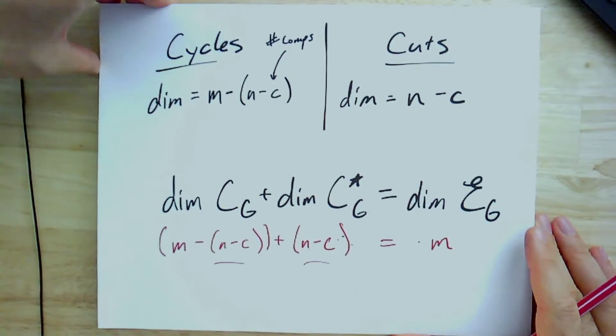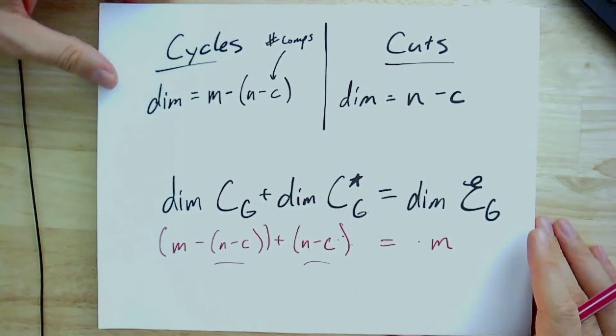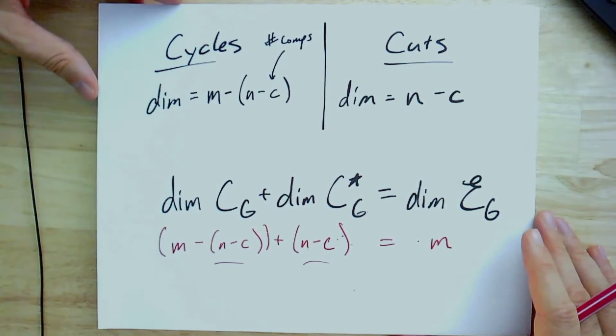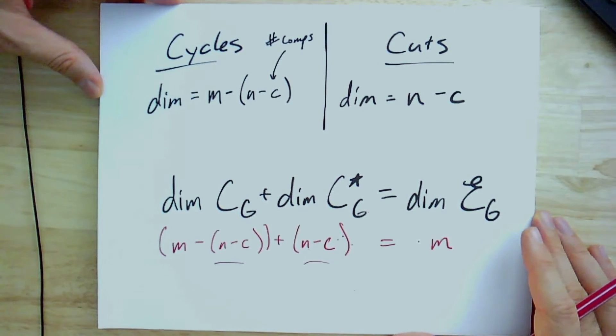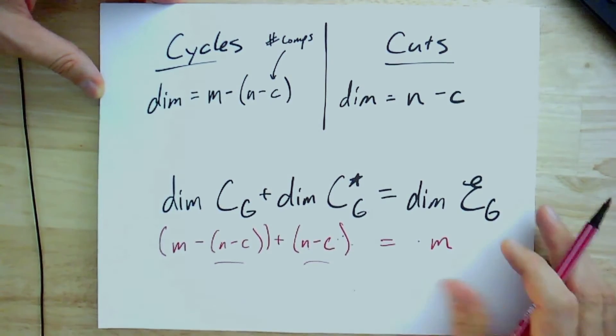So the number of edges in a spanning tree is going to depend on, well, first, whether or not there exists a spanning tree. But if the graph is connected, there will be n minus 1 edges.